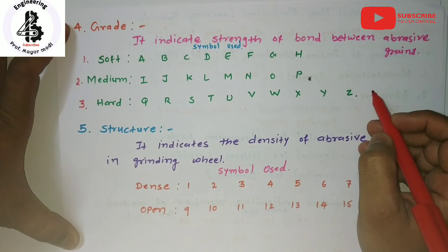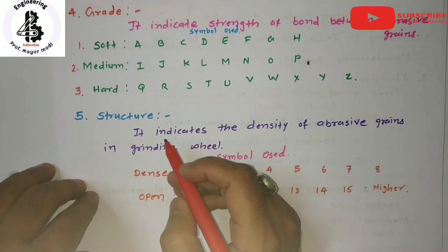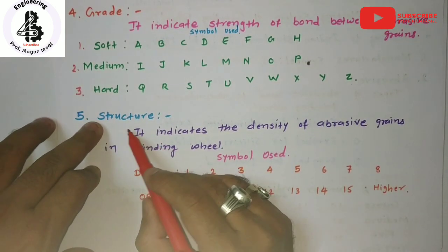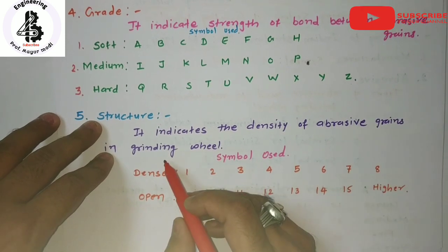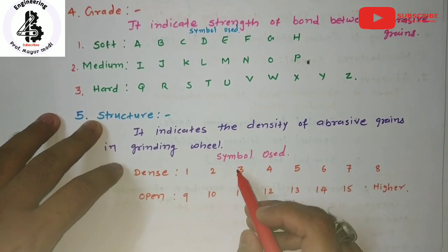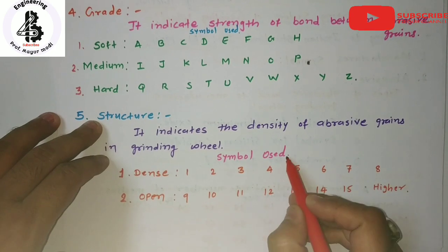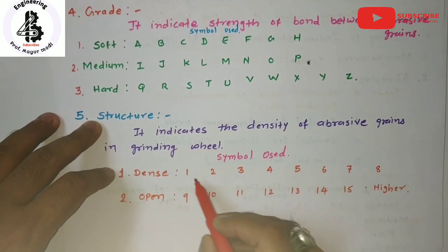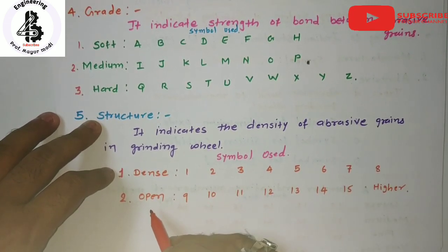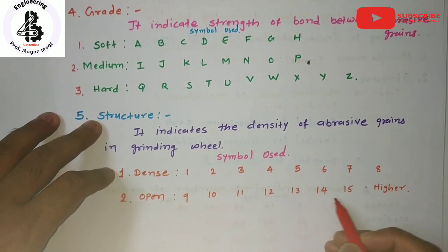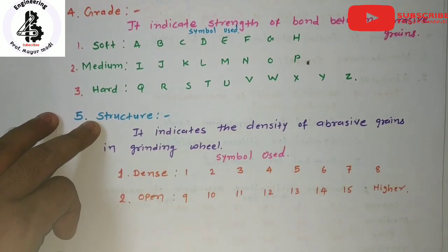The fifth indication on the grinding wheel is structure, which indicates the density of the abrasive grains in manufacturing the grinding wheel. Generally there are two types: dense and open. For dense structure, the symbols used are 1, 2, 3, 4, 5, 6, 7, and 8. For open kind of density, the numbers are 9, 10, 11, 12, 13, 14, 15, or higher grades to represent the structure of the grinding wheel.